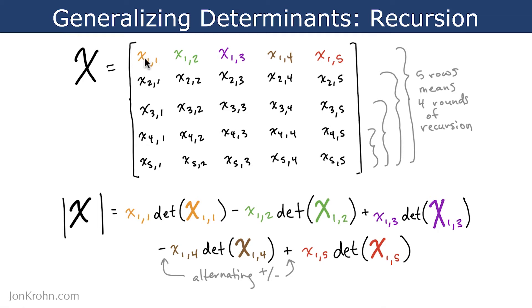So the element X11 is in the first row and the first column, that's why it's 11. And so we multiply that value by the determinant of the 4x4 matrix that is all of the elements that aren't in that first row or that first column.